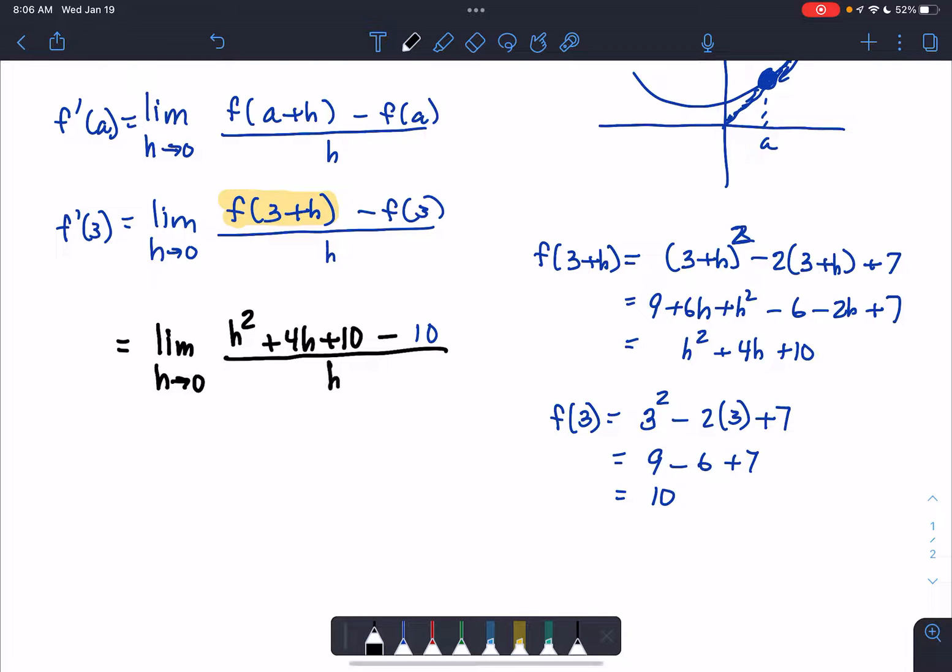And then that's all over h. And then we have the limit as h approaches 0 of h squared plus 4h all over h. And at this point, we can divide through by h, thereby simplifying the expression.